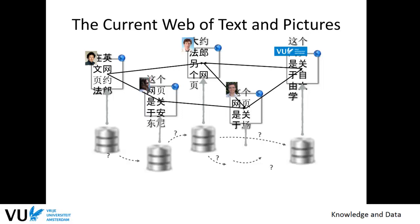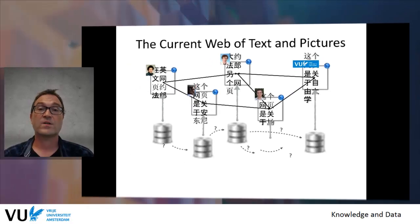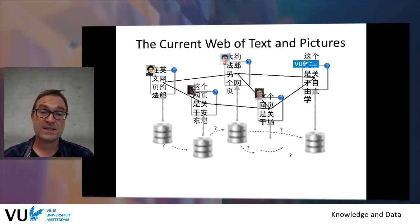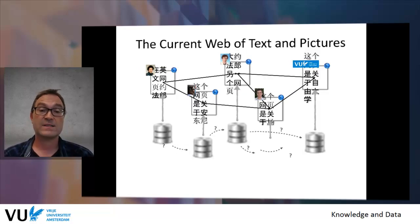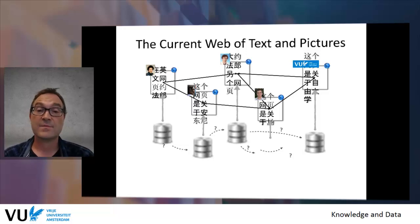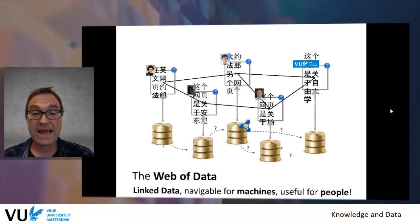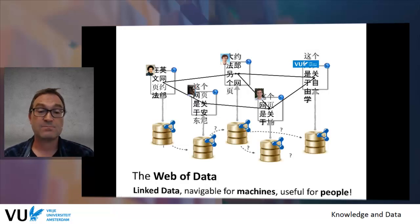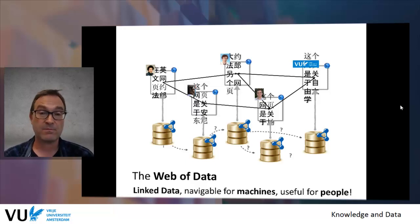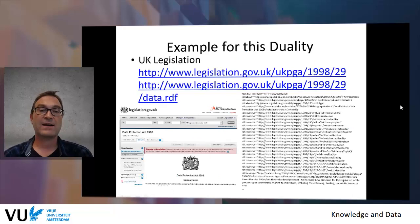I showed previously the current structure of the web of texts, documents, and pictures, and that although all the information nowadays really comes from data sources and databases, those databases themselves are not accessible. If we can manage to change this, then we can really create a web of data that is both navigable for machines but can also remain useful for people.